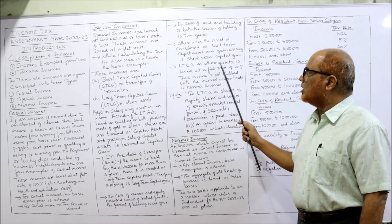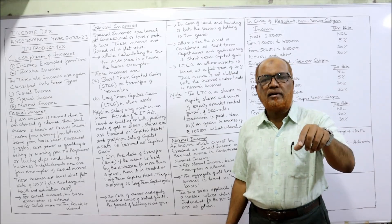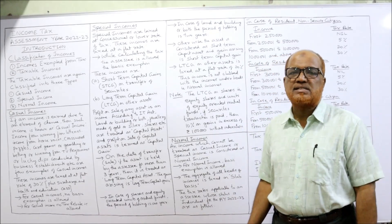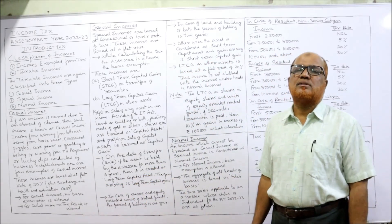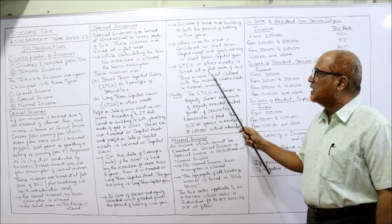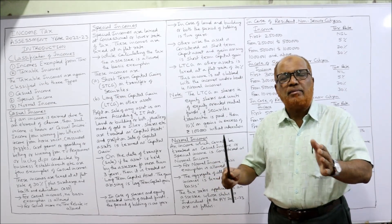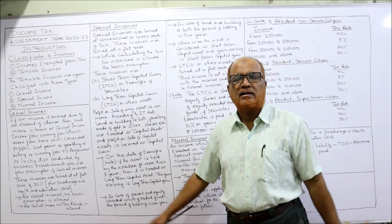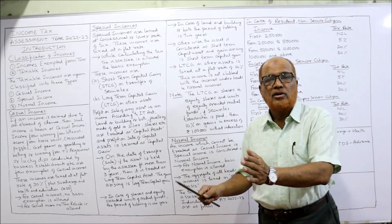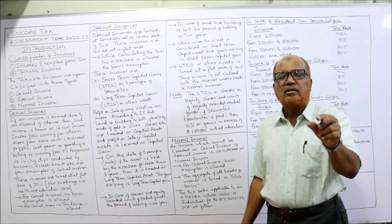LTCG on other assets is taxed at a flat rate of 20%. Remember: casual income is taxed at 30%, LTCG on other assets at 20%. These incomes must not be clubbed with normal income — they must be kept separate while computing tax liability.